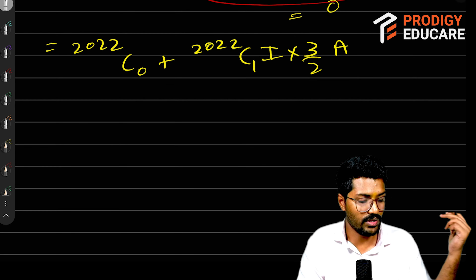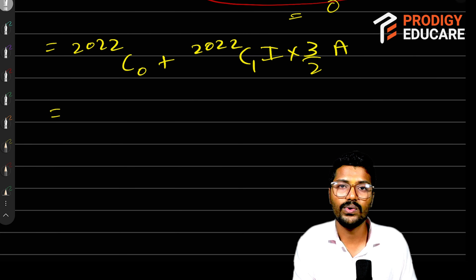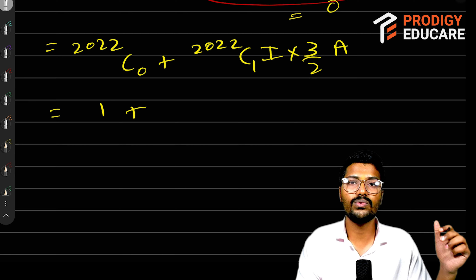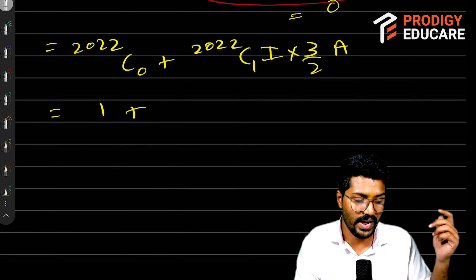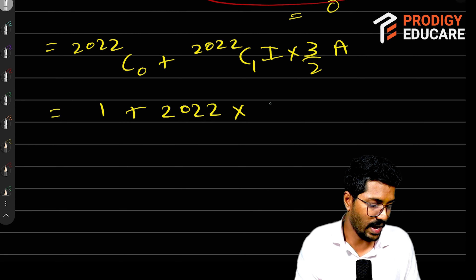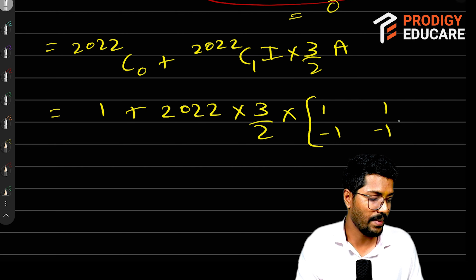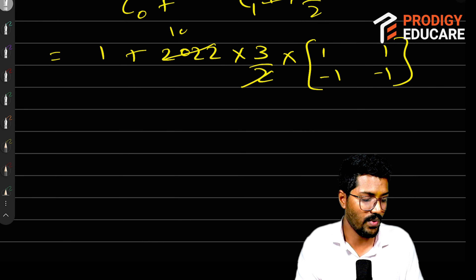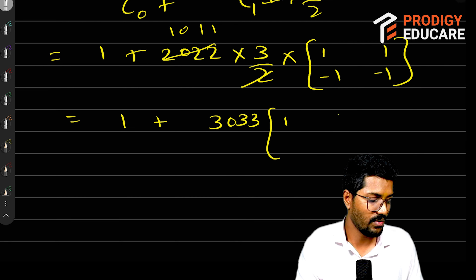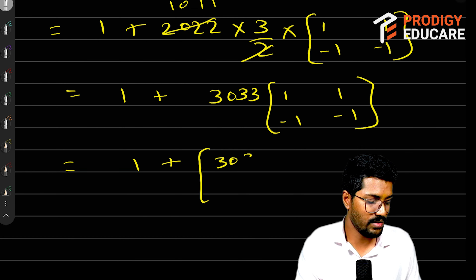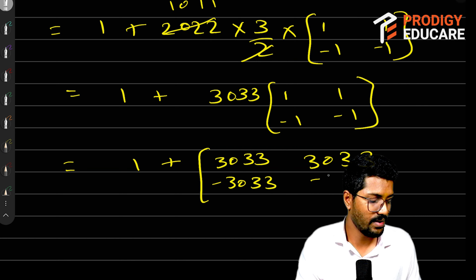Let's further solve this. NC0's value is 1, plus 2022C1 — the value of NC1 is N, so here it is 2022. So the expression becomes: I plus 2022 times (3/2) times A, which is I plus 3033 times A. That gives identity matrix plus 3033 times [[1, 1],[-1, -1]], resulting in: 3033, 3033, minus 3033, minus 3033.